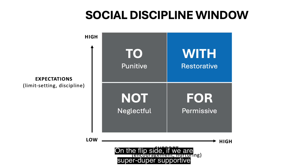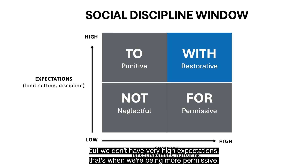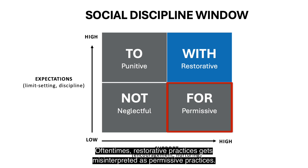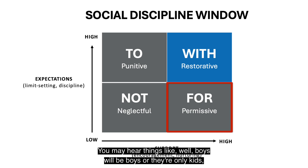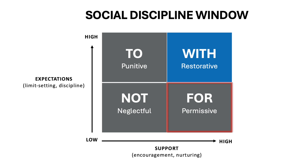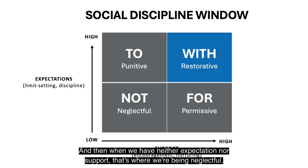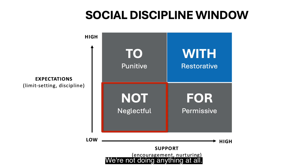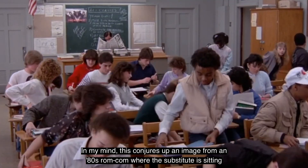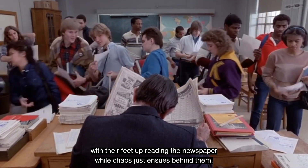On the flip side, if you're highly supportive but have low expectations, that's permissive. Restorative practices often gets misinterpreted as permissive practices — this is where you see enabling behaviors and hear things like 'boys will be boys' or 'they don't know any better.' And when we have neither expectation nor support, that's neglectful — not doing anything at all, like an 80s substitute with feet up reading the newspaper while chaos ensues.